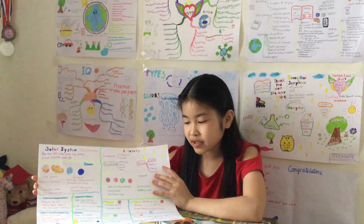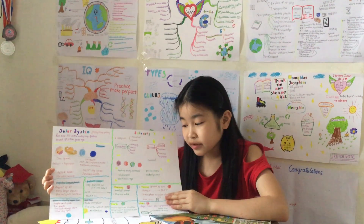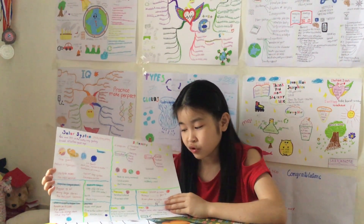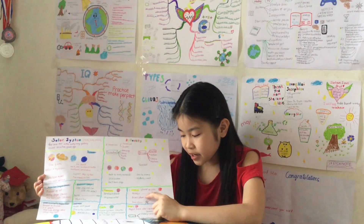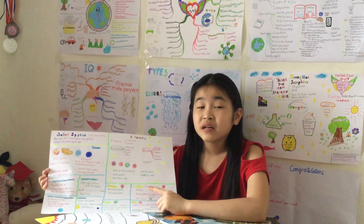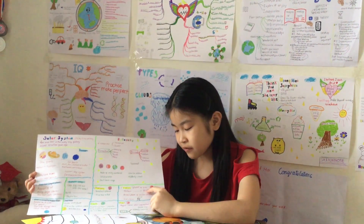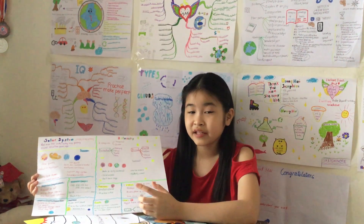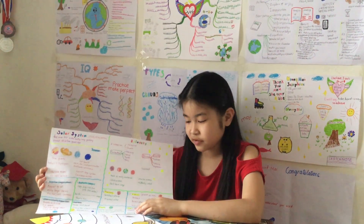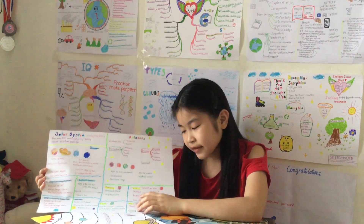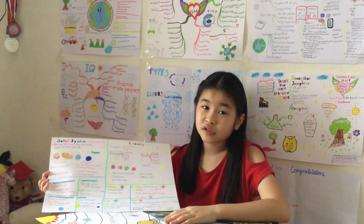Now let's go through each terrestrial planet more specifically. Mercury is the smallest planet and has a short orbit. Next is Venus, the planet of fire — the hottest temperature on Venus is 867 degrees Fahrenheit. Venus has an atmosphere of carbon dioxide and lava flows, which are the causes of that extreme heat.